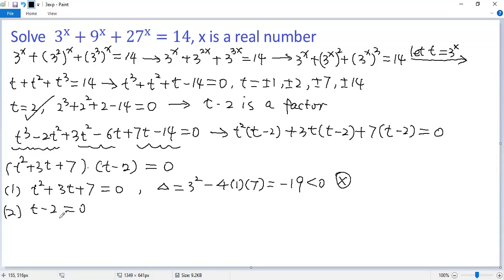From the second case, we get t equals 2. But t is equal to 3 to the power of x, so we get 3 to the power of x equals 2.